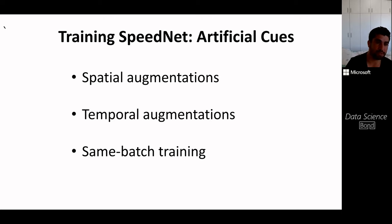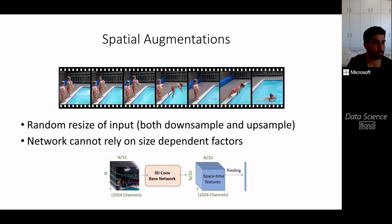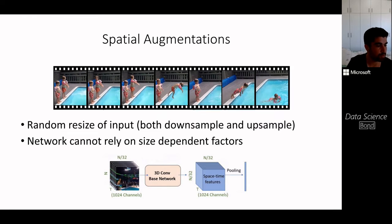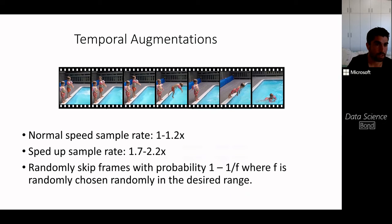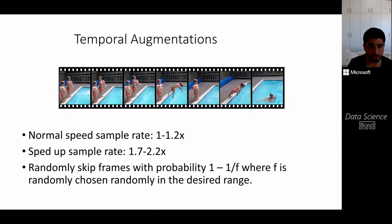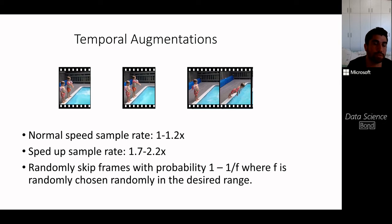An important aspect of training SpeedNet is applying a wide range of augmentations. For spatial augmentations, we randomly resize the input frames both up and down, so the network cannot rely on size-dependent factors like motion magnitude. For temporal augmentations, normal speed videos are produced at about 1.0–1.2× the original speed, and sped-up videos at 1.7–2.2×, achieved by randomly skipping frames with some probability.